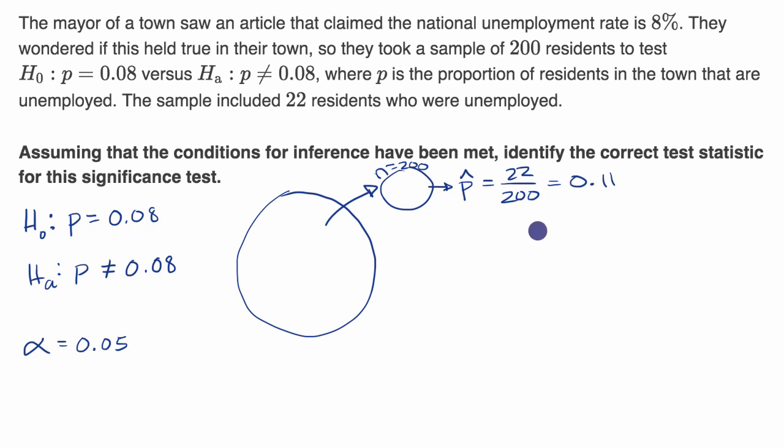Now the next step is, assuming the null hypothesis is true, what is the probability of getting a result this far away, or further, from the assumed population proportion? And if that probability is lower than alpha, then we would reject the null hypothesis, which would suggest the alternative. But how do you figure out this probability?